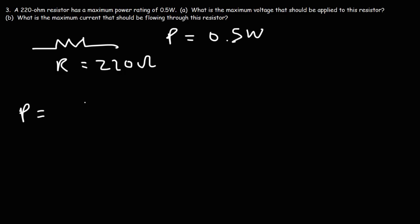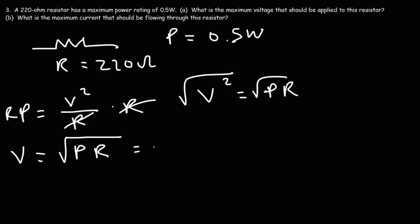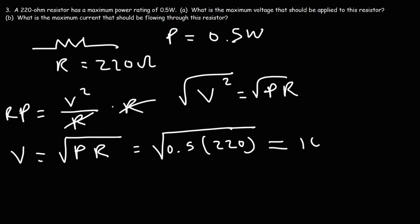To calculate the maximum voltage, we use P = V²/R. Multiplying both sides by R gives V² = P × R, and taking the square root gives V. So the maximum voltage is the square root of the maximum power times the resistance: the square root of 0.5 times 220. Half of 220 is 110, and the square root of 110 is approximately 10.49 volts. If you apply 12 volts to this resistor, it will overheat and you could damage the component.